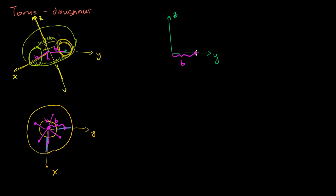From that center point at distance b, we have a radius of length a — so these circles have radius a. One parameter, which we'll call s, is going to be the angle that this radius makes with the xz-plane. So s describes where we are around each individual circle.